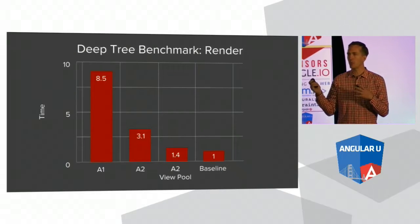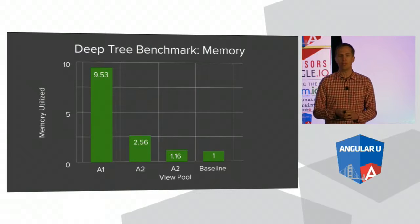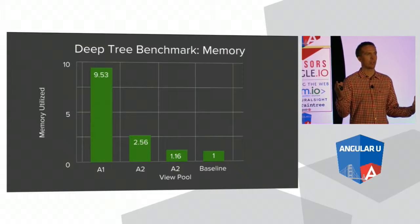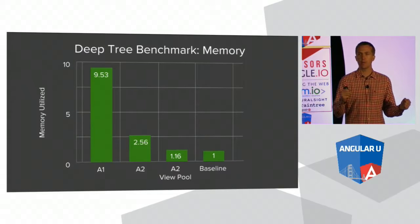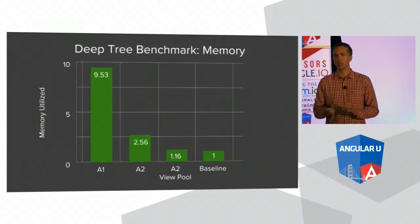The 'A2 with the view pool' number — this is Angular 2 once your application is loaded, for all common operations like scrolling, creating new items in a repeater, switching between views. We're very close to the baseline. In addition to the raw performance, we're similarly better on memory. This is really important if you've got a very large desktop application, or if you're building for mobile, where you have much less memory at your disposal — Angular 2 is going to shine.